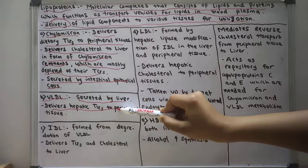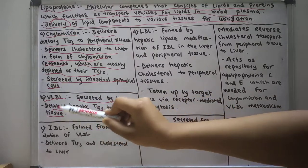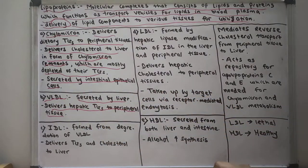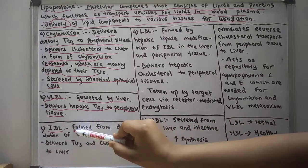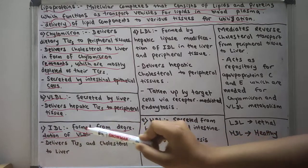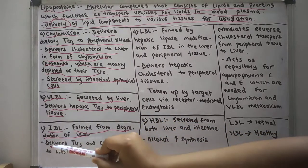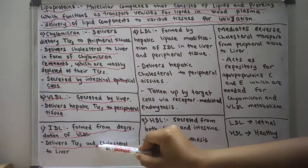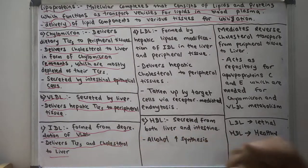Now let us talk about VLDL. VLDL is secreted by the liver and it delivers hepatic triglycerides to peripheral tissues. Intermediate density lipoprotein (IDL) is formed from the degradation of very low density lipoprotein, and it delivers triglycerides and cholesterol to the liver.